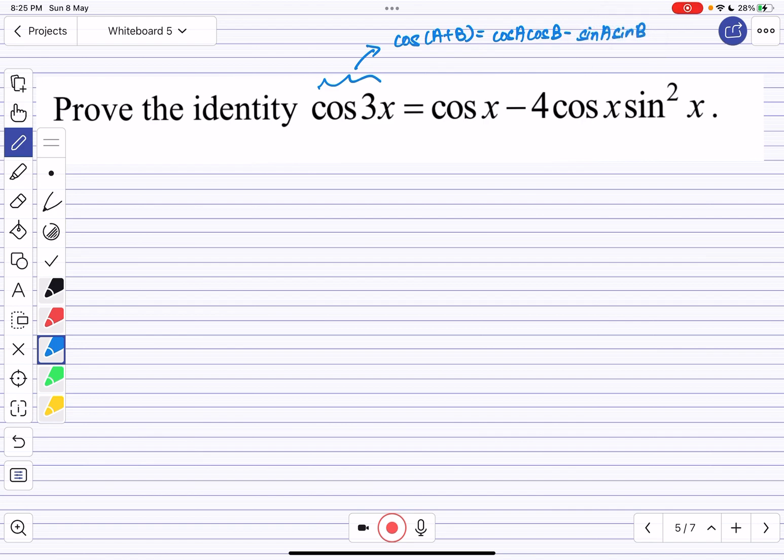So from here, what I do is, I now change this to cos(a+b), which is cos a cos b, subtract sin a sin b.